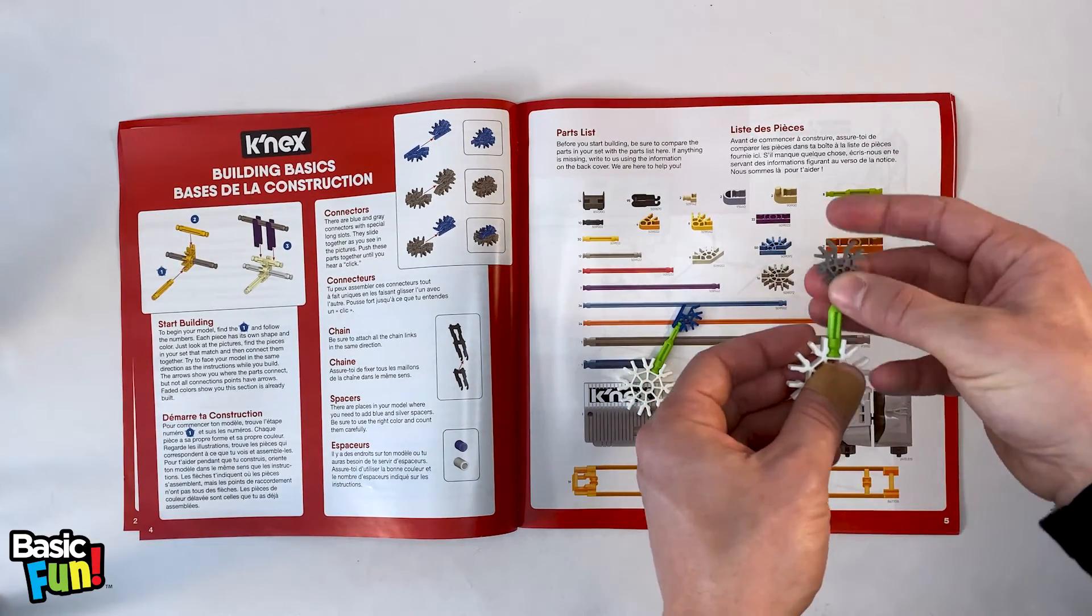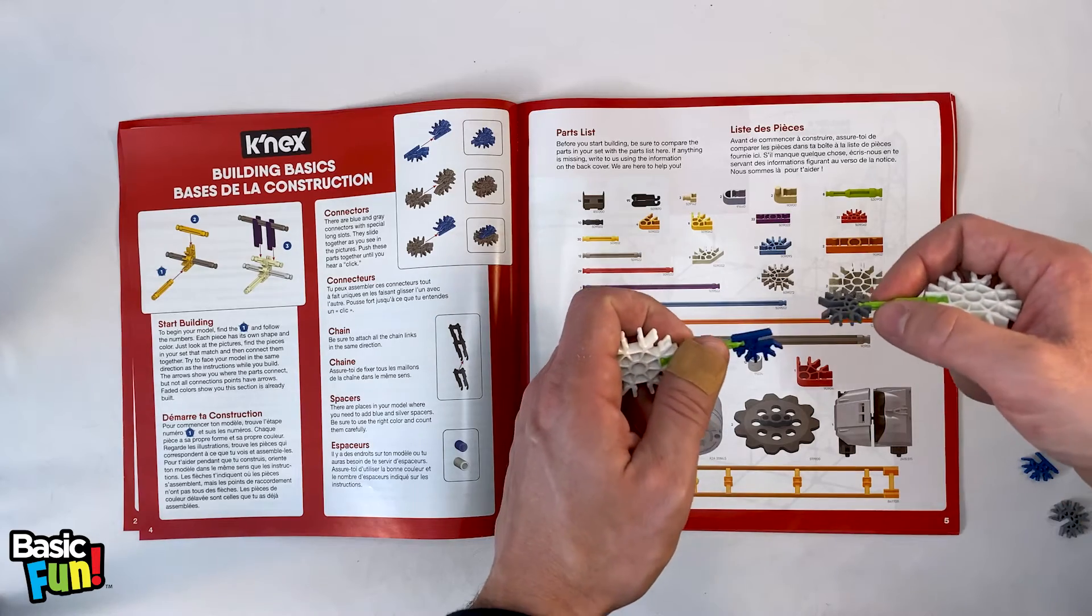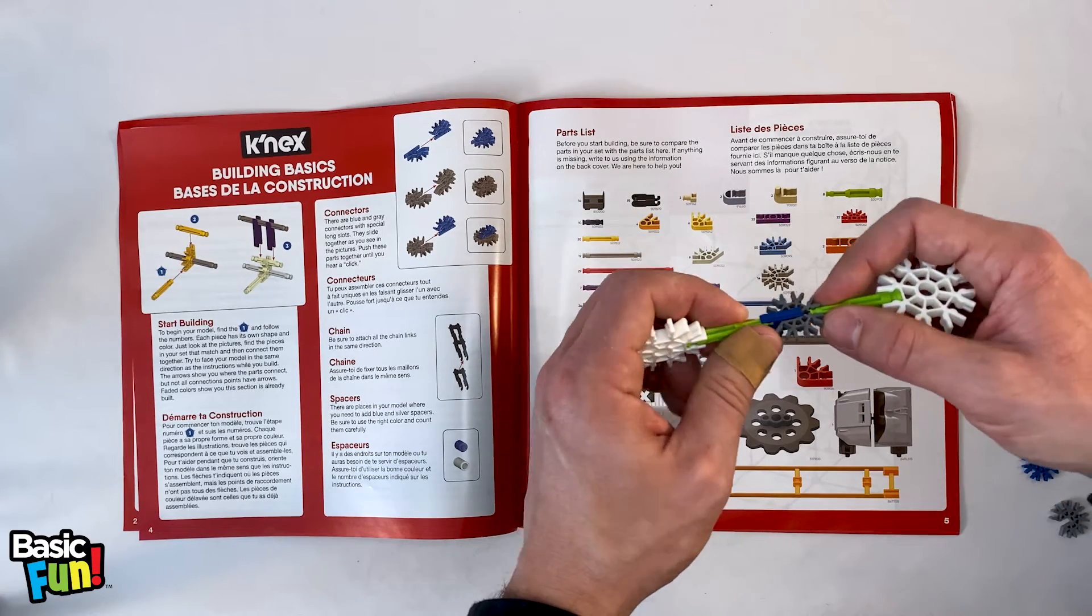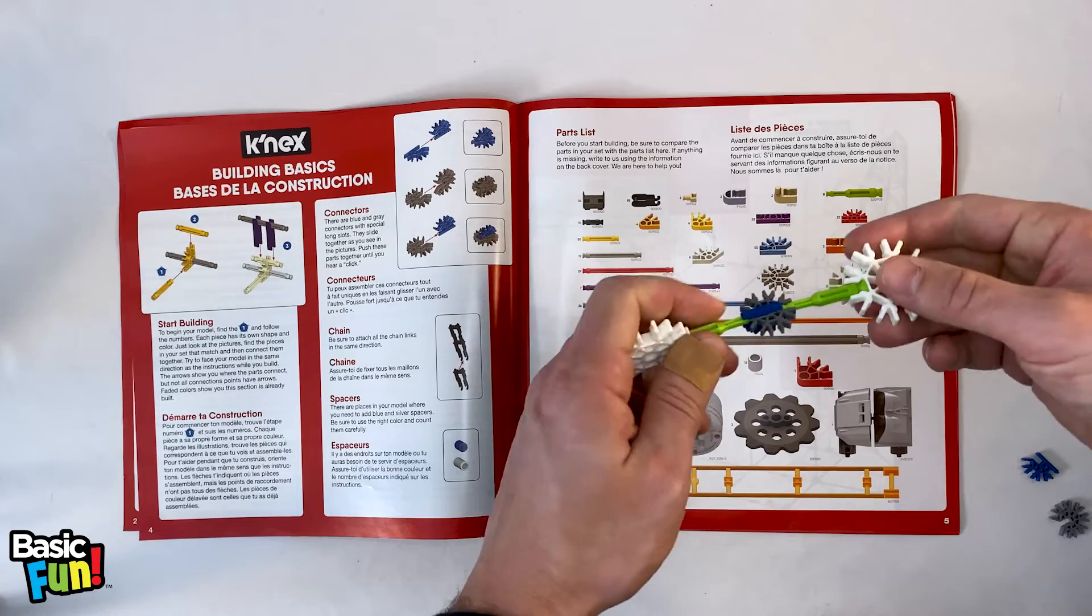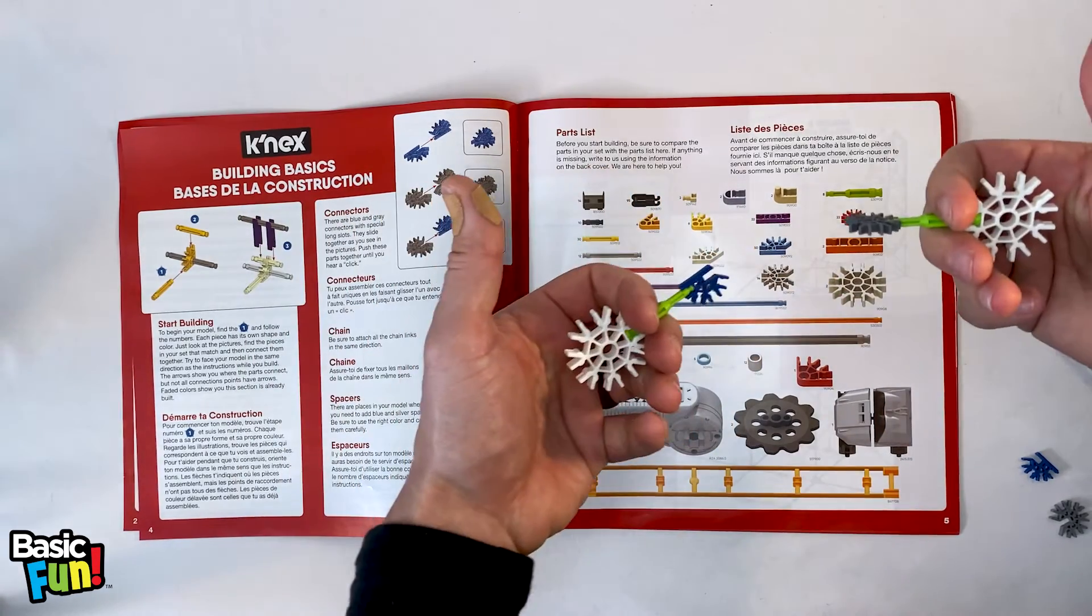So then all you have to do is attach your four-slot connector here, your seven-slot connector here, and then you have an easier way to hold onto these, guide them into position, and press them together. Then to pull them apart, it's really easy to do just like that.